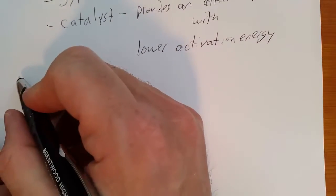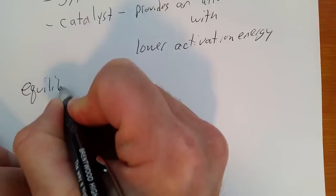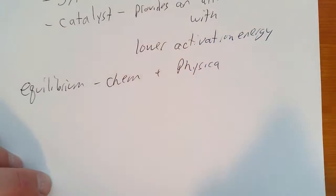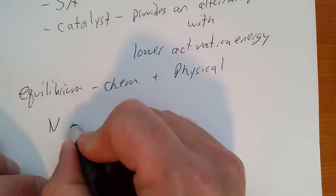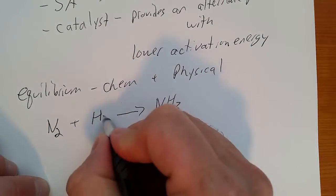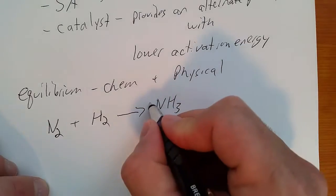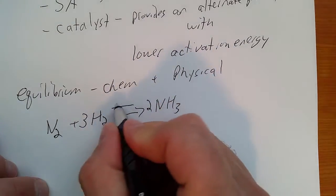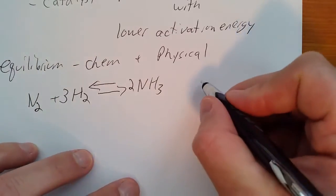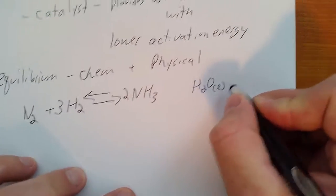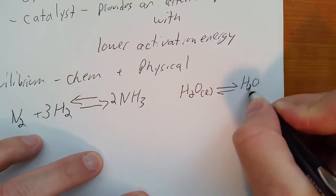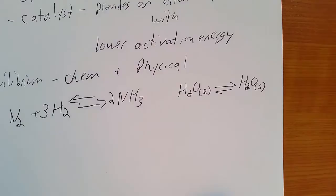Some chemical and physical reactions can reach equilibrium. You can have chemical and physical equilibrium. If you take nitrogen and hydrogen, you can make ammonia — that is a chemical equilibrium reaction. If you have liquid water at exactly zero degrees Celsius, you'll have an equilibrium reaction between that and ice, solid water. That would be a physical equilibrium.